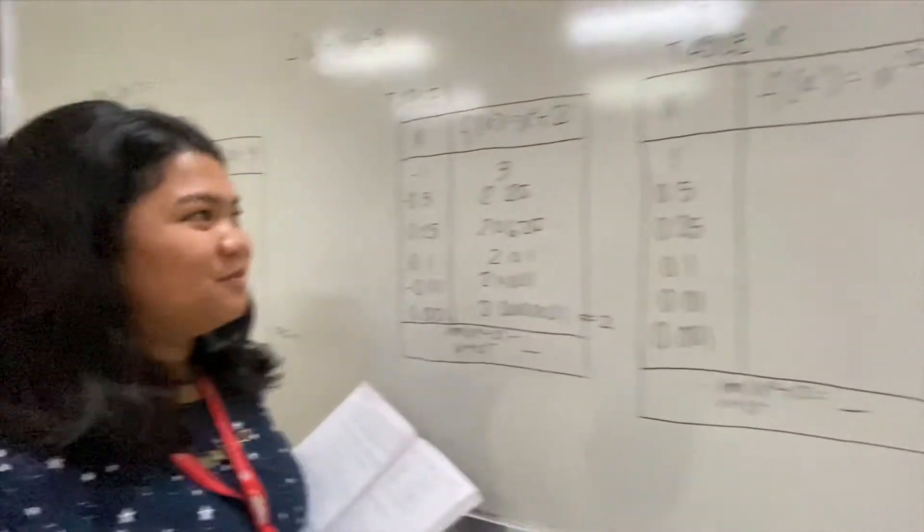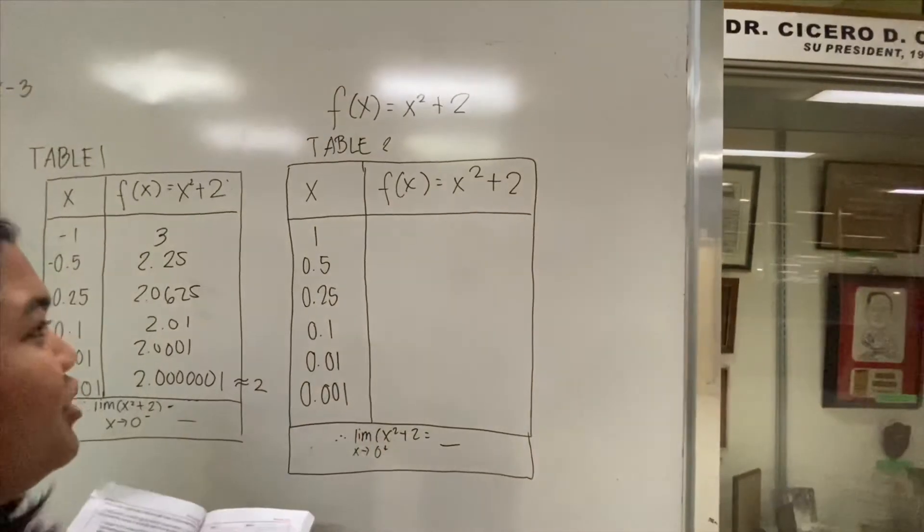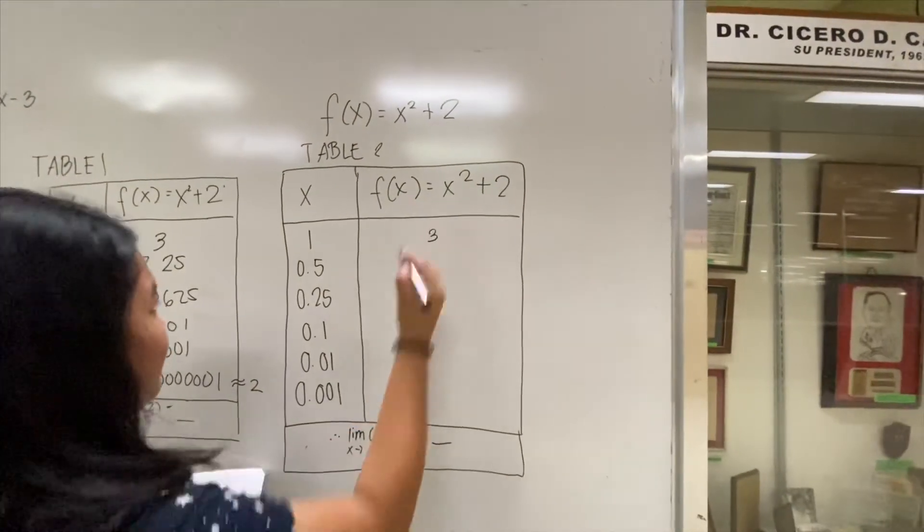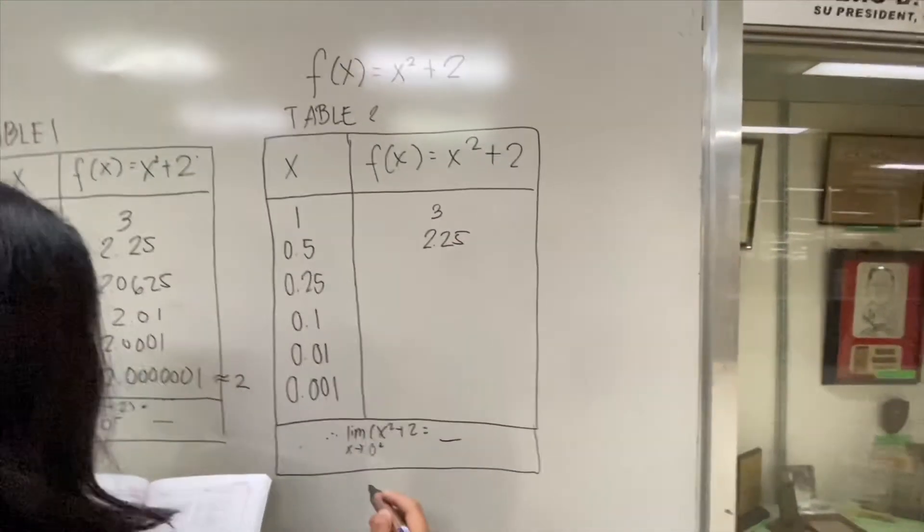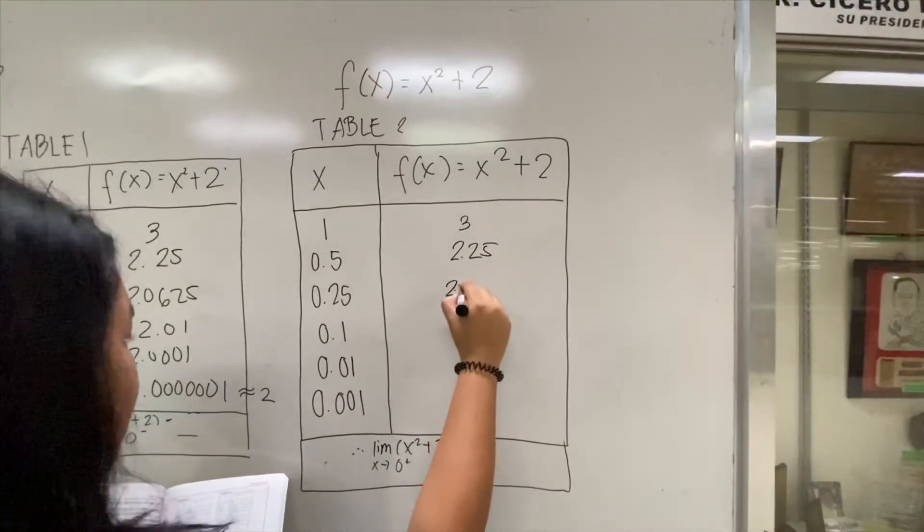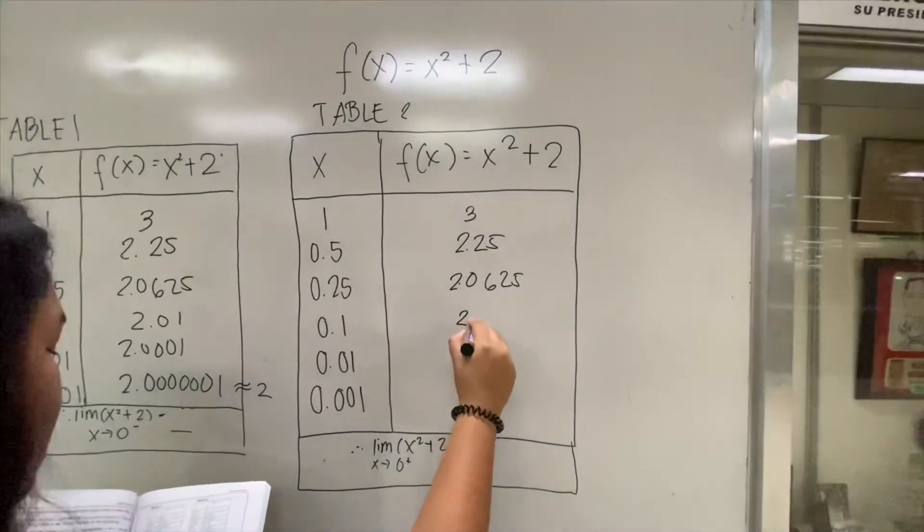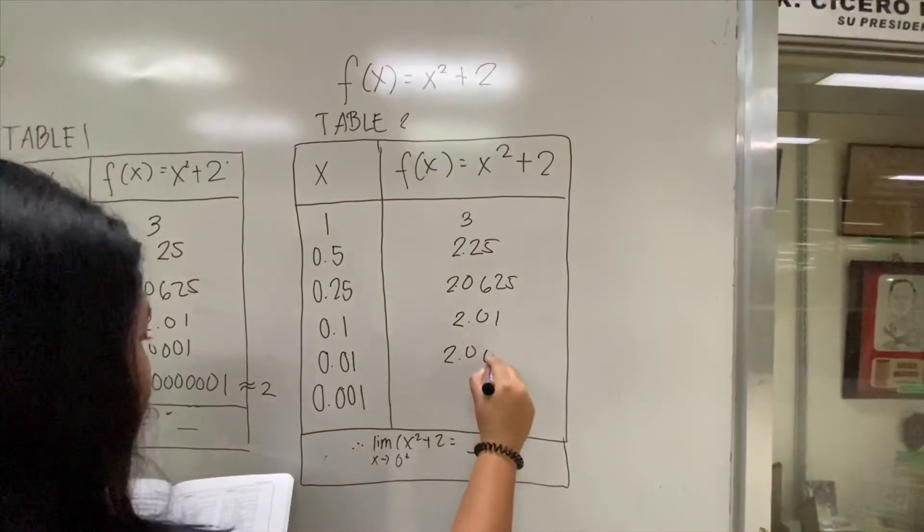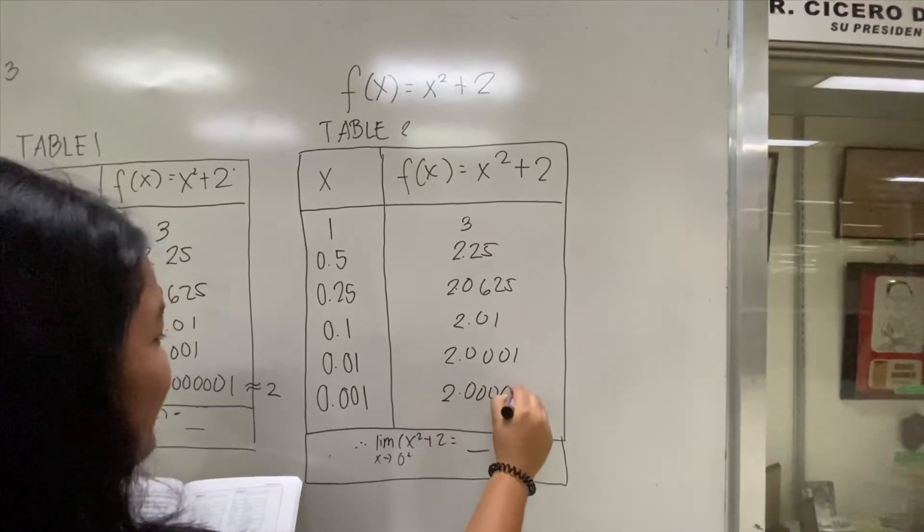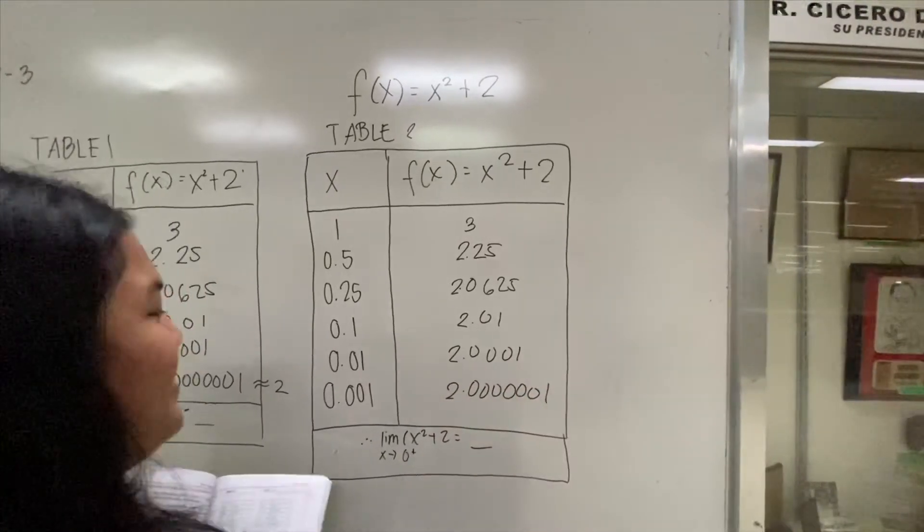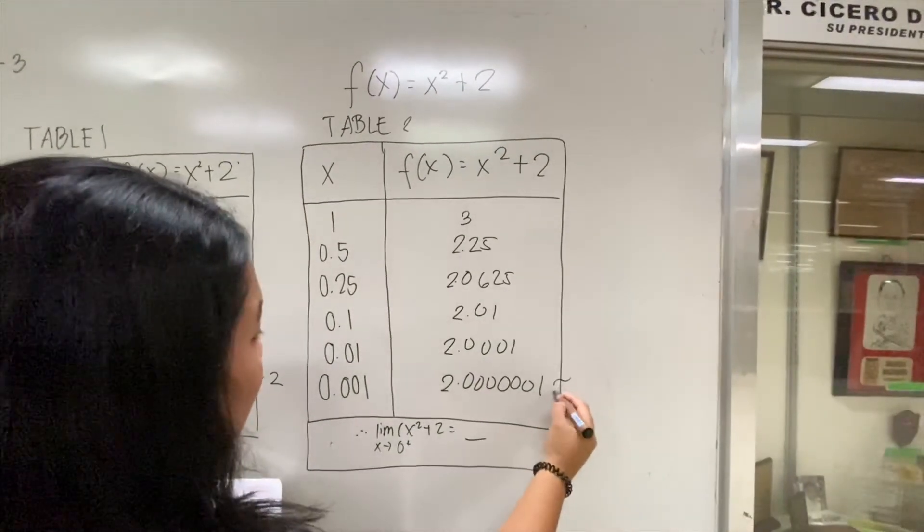Let's move on to table 2. In table 2, we have positive 1 and x² + 2, which gives us 3. Then 0.5 gives 2.25, 0.25 gives 2.0625, and so on and so forth: 2.01, 2.0001. And just like table 1, the values all go to 2.